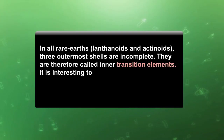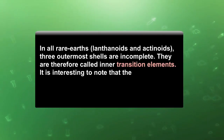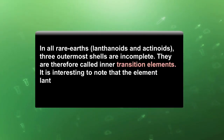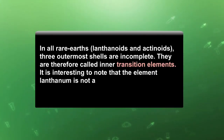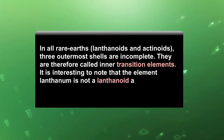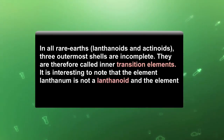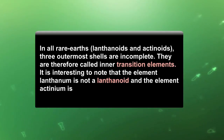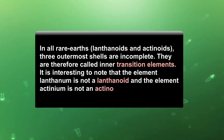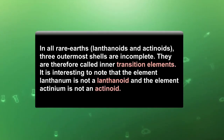In all rare earth elements — lanthanoids and actinoids — three outermost shells are incomplete; they are therefore called inner transition elements. It is interesting to note that the element lanthanum is not a lanthanoid, and the element actinium is not an actinoid.